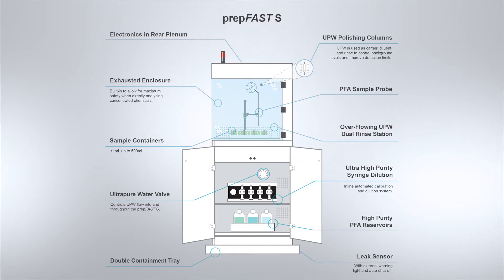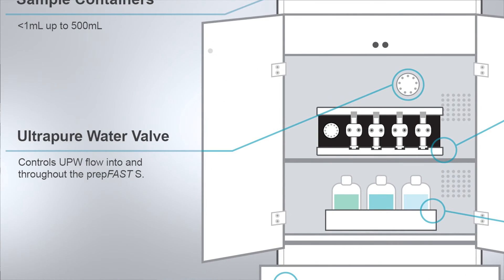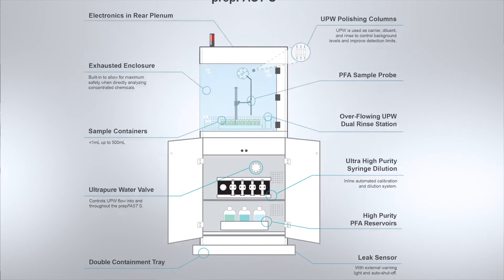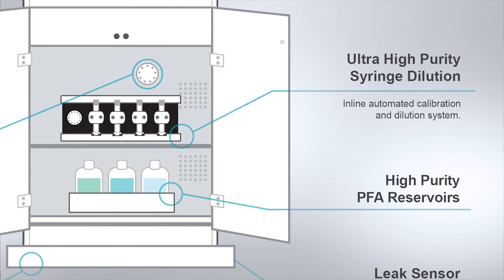The PrepFast-S also utilizes syringe-driven flow of ultra-pure water, semiconductor-grade nitric acid, and standard solutions to automate sample and standard preparation. All chemicals and samples are analyzed directly from the original PFA containers, eliminating potential errors, variability, and contamination from manual sample preparation, especially when performed by multiple users.